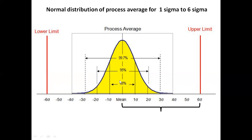With plus or minus 1 sigma, 68% of components are accepted. Plus or minus 2 sigma gives 95% acceptance. Plus or minus 3 sigma gives 99.7% acceptance. Moving to 4 sigma, 5 sigma, and 6 sigma levels, the spread becomes narrower and the quality becomes higher, with minimum variation.